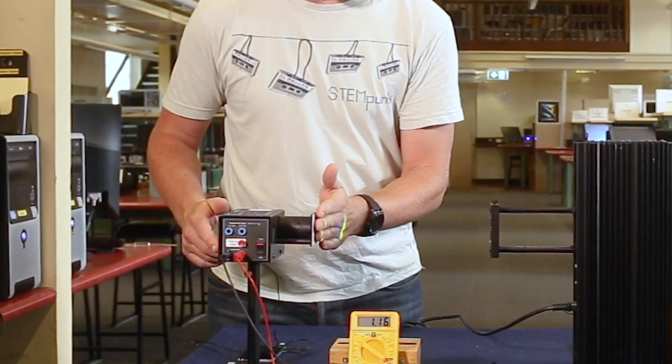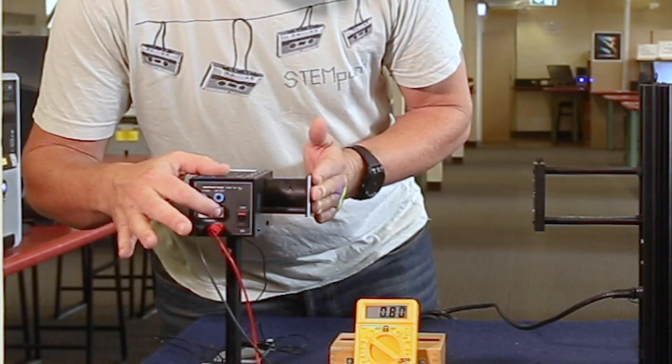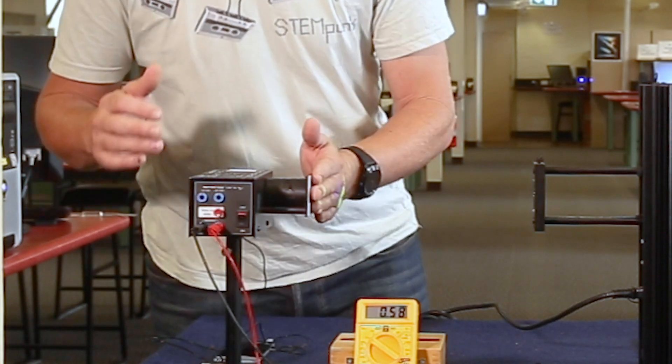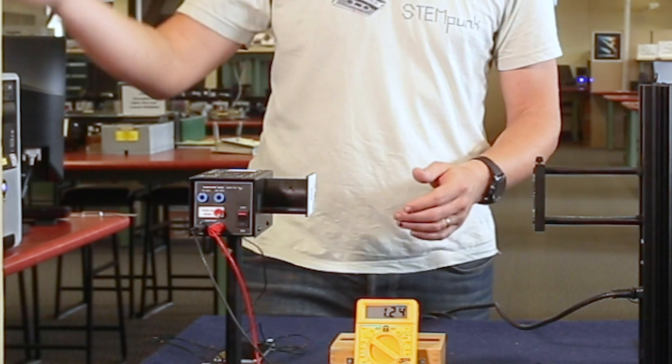So we're going to close that up to block any light out. I also want to calibrate the detector, so I'm going to put my finger over here so no light's getting in. I'm just going to press the zero button, and that makes sure that everything I'm measuring is the actual thing that I want to be measuring, not anything else that's around.